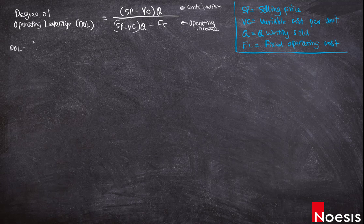DOL will be the percentage change in operating income divided by the percentage change in the number of units sold.